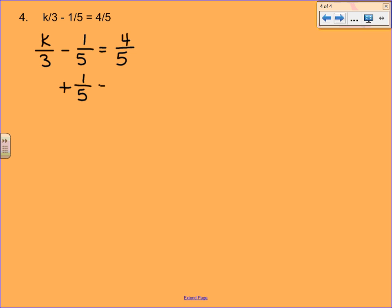The nice thing about this problem is, at least for the adding, we've got a common denominator. The negative 1 fifth and positive 1 fifth cancel. So we are just left with k over 3. And on the other side, we've got 5 over 5, which, if you think about, is just 1.